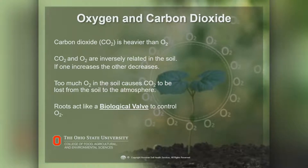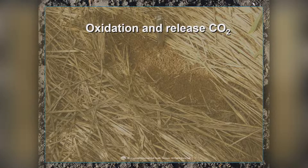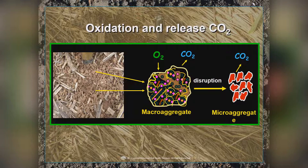Once you start putting oxygen into the soil, the microbes start to eat the glues surrounding the macroaggregates. Combined with the disruption of tillage, this breaks macroaggregates down into microaggregates. These microaggregates don't have as much carbon or glue, and when it rains, they set up like cement and seal off — causing poor soil structure and a lot of soil compaction.